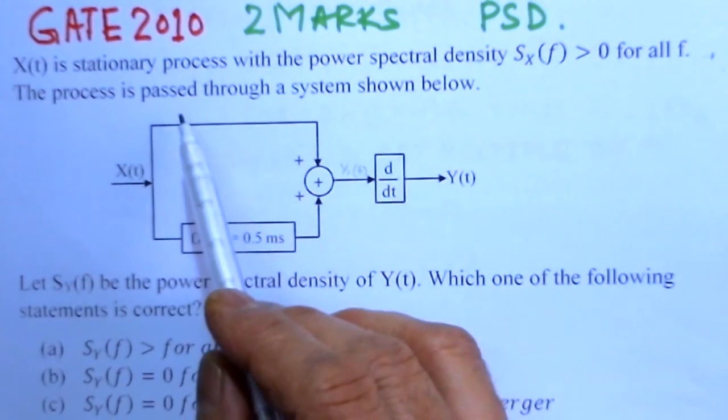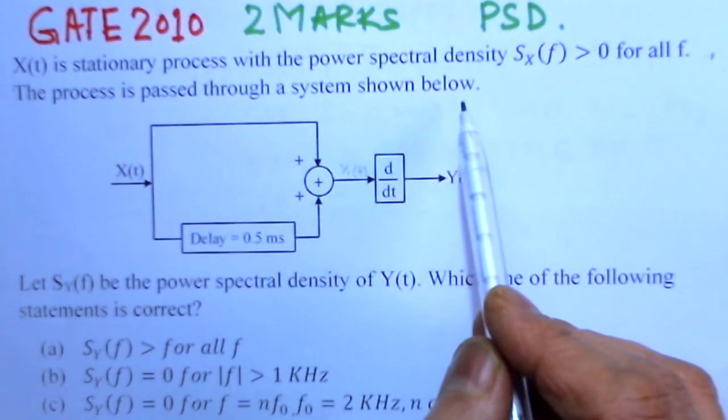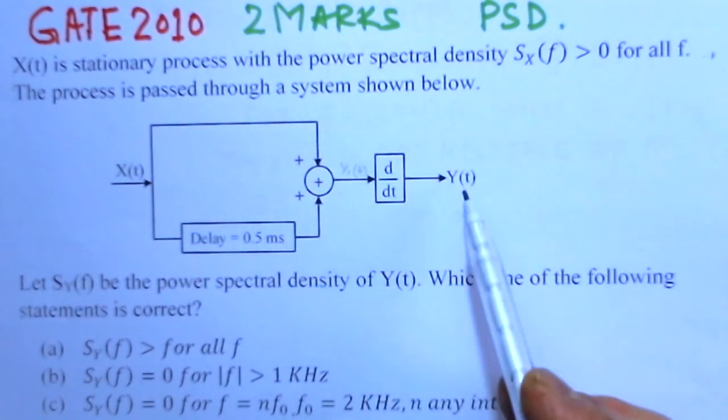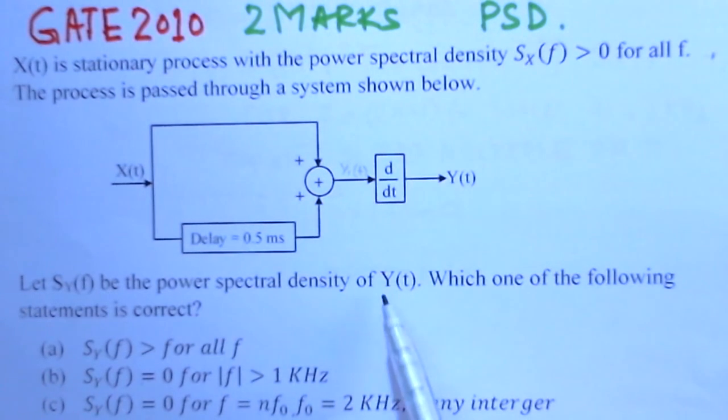The process is passed through a system shown below. This is the system through which this process is passed. Let SY(f) be the power spectral density of Y(t), this Y(t) power spectral density of Y(t).